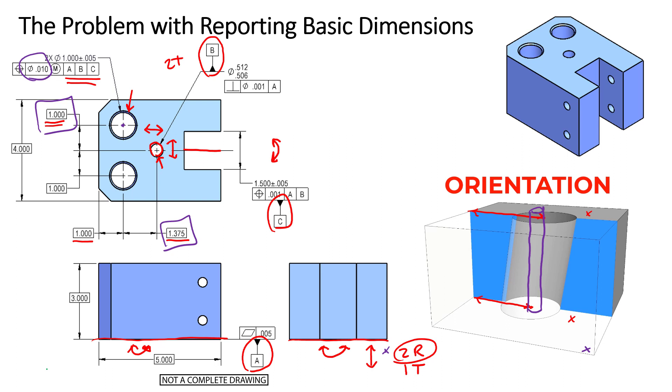And using the positional tolerance, as long as the axis of this cylinder lies entirely within the tolerance zone defined by the positional callout, we have a passing feature.